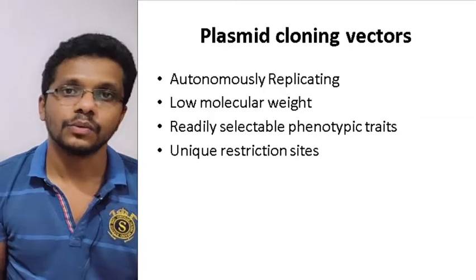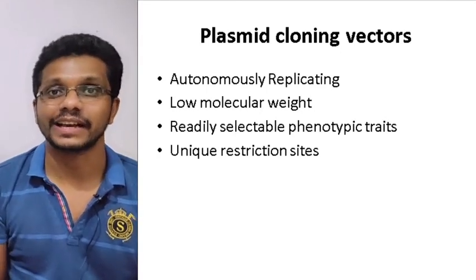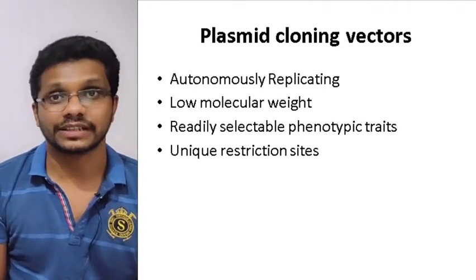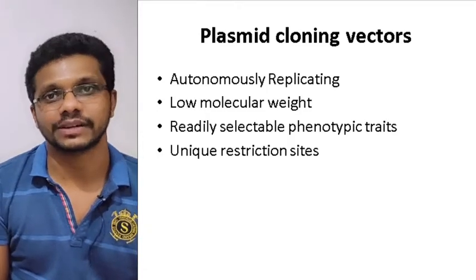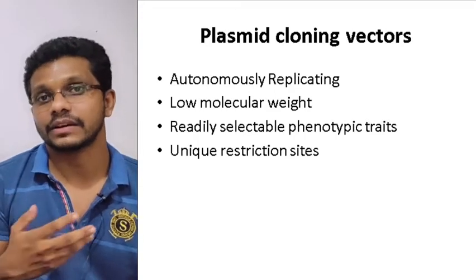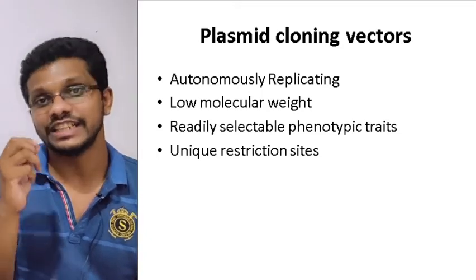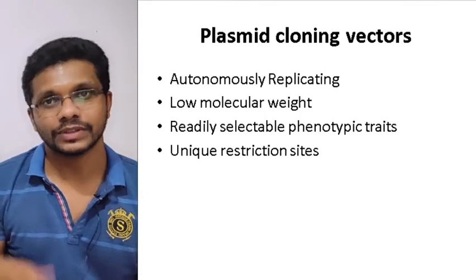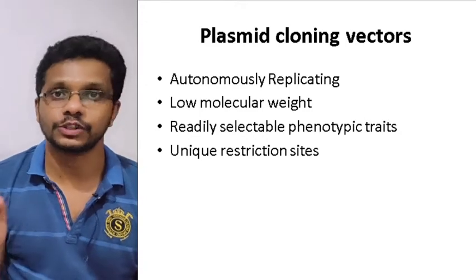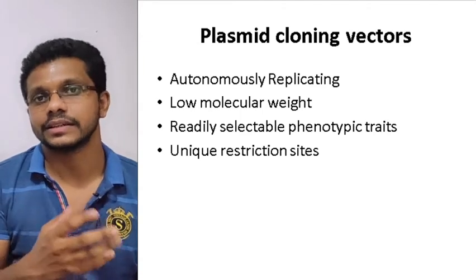Before that, what are the ideal characteristics of a plasmid cloning vector, or how do you evaluate a plasmid cloning vector based on its features? The plasmid cloning vector or any other vector should be autonomously replicating. It should have the sequence which actually begins or initiates the replication of that DNA — that's the origin of replication. All types of vectors, except insertional vectors, should have the origin of replication. The origin of replication is the site of DNA from where DNA replication begins.